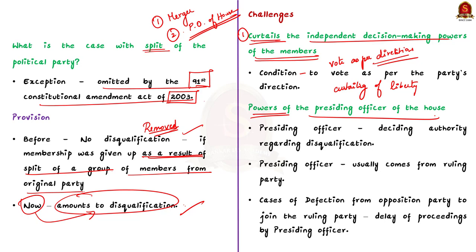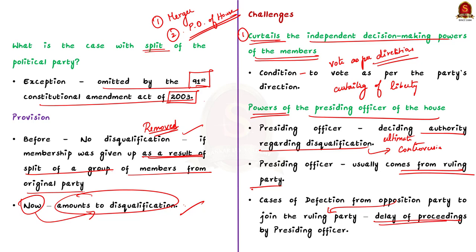The second challenge lies in the powers of the presiding officer of the house. The presiding officer is the ultimate deciding authority on questions arising out of disqualification. The presiding officer usually comes from the ruling party, so if a member defects from the opposition and joins the ruling party, the presiding officer may delay the disqualification proceedings in favour of the ruling party. Wide powers given to the presiding officer regarding disqualification is also an issue.